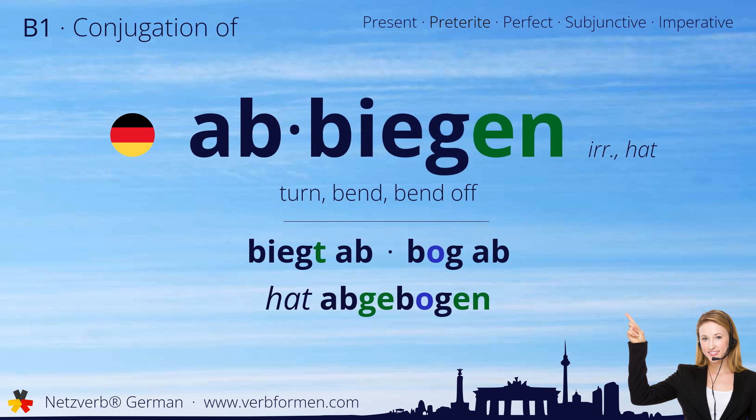Let's start with the stem forms. Biegt ab. Bog ab. Hat abgebogen.